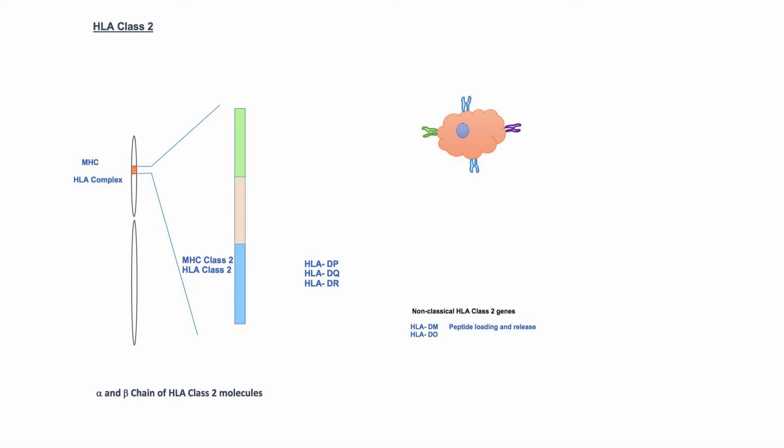Similarly, HLA class 2 region also has three classical genes. These genes encode both alpha and beta chain of HLA class 2 molecules.